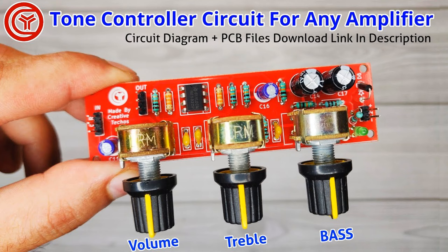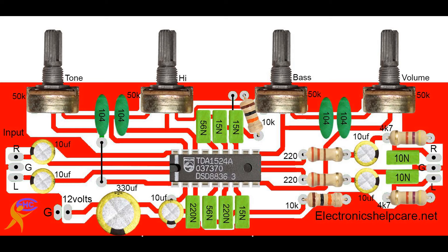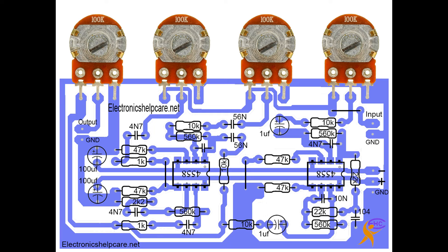1. Low-Pass Filter Design: A simple low-pass filter can be made with a resistor and capacitor (RC) or an inductor (RL) in series or parallel with the load. Functioning: At low frequencies, the capacitor acts like an open circuit, allowing the signal to pass. At high frequencies, the capacitor acts like a short circuit, sending high-frequency signals to ground and blocking them from reaching the load. The cut-off frequency Fc is defined by the resistor and capacitor values.